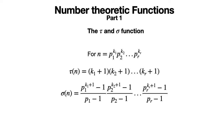Welcome to this 7-part series on the concept of number theoretic functions, which aims to give a complete understanding of the theory and proofs associated with this branch of number theory. We will discuss various topics ranging from the sum of the divisors function sigma, to the greatest integer function and its applications in enumerating the greatest exponent of a prime which divides n factorial. We will also touch upon multiplicative functions and give a variety of results concerning them along with their proofs. In this part we discuss the tau and sigma function.